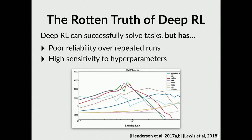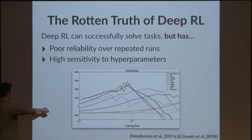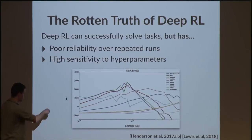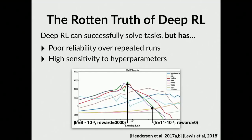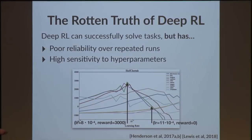Another problem is super high sensitivity to hyperparameters. The x-axis is learning rate (logarithmic) and the y-axis is total reward. Looking at the green line — the one that achieves the highest reward — at learning rate 1.1×10⁻⁴ you get reward zero, but at learning rate 8×10⁻⁴ you get reward 3,000. That's crazy — super high variance just based on a tiny change in learning rate.